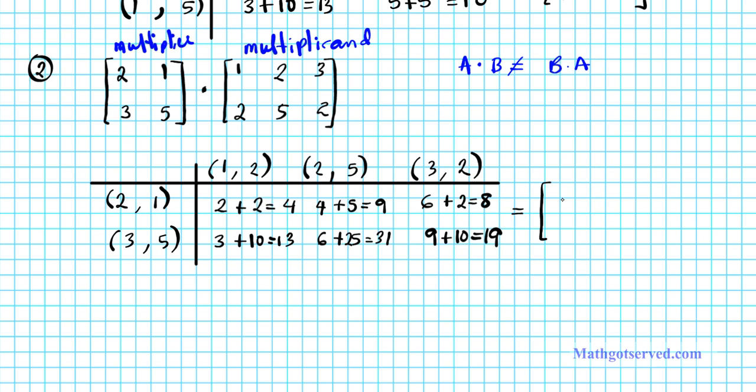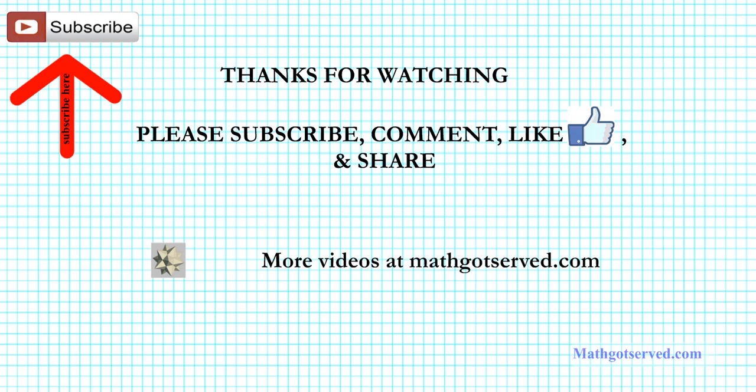Alright. So let's go ahead and write down what our resulting product is. It's going to be 4, 9, 8, and then 13, 31, 19. So that's an easy way to multiply matrices. I'd like to thank you so much for taking the time to watch this presentation. Please subscribe to our channel for updates and access to other cool clips such as this. And please post a comment to let us know what you think about this presentation. We really appreciate it. Thanks again for watching and have a wonderful day.